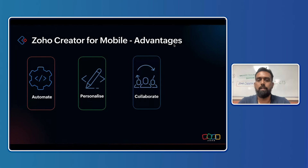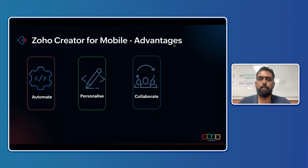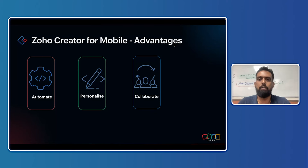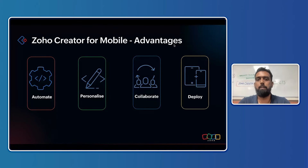Collaboration is another major advantage. No user or stakeholder wants to work in silos — they want to work together in cohesion. In mobile application development, you have different platforms like the Zoho Creator low-code platform where you can use all your developed applications, and you also have the customer portal app for external stakeholders. These options provide great collaboration advantages.